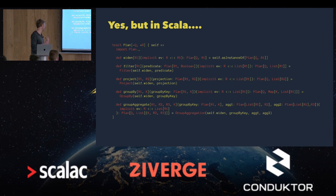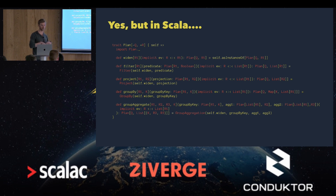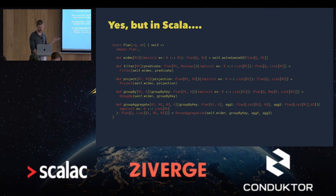We can group by, defining a group-by key that maps each element to some value K, producing a map where each row gets rolled up under the same key. We can also do a group aggregate, which does everything in one step — grouping by a particular key and then performing aggregations on the values. The example here has two aggregation helpers just to finish the example, but in reality it would be more general.